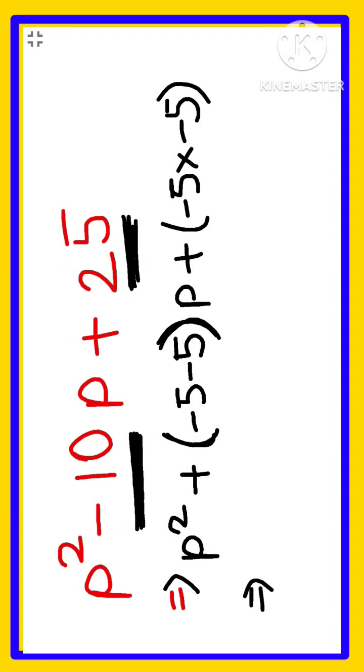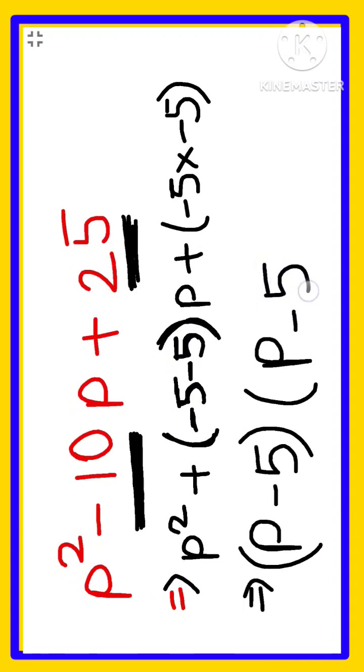Here directly we can write the variable. We need to write the first number along with the symbol, that is minus 5. So here p minus 5. And again we will write p and the second number is minus 5 along with the sign. So here p minus 5 and p minus 5 are the factors of p squared minus 10p plus 25.